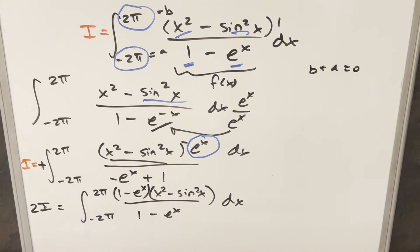But the reason this works so well is because then we can just cancel 1 - e^x with 1 - e^x. And now we're just left with x² - sin²x, which is something that's going to be pretty easy to integrate.